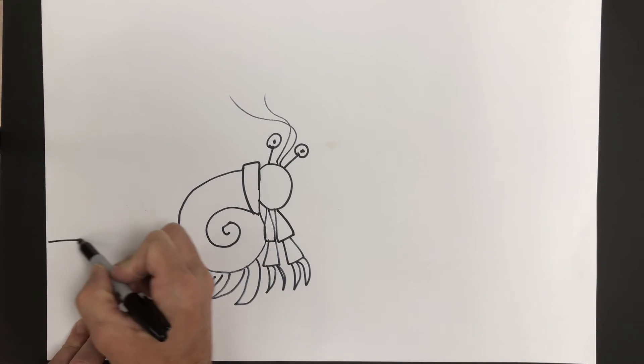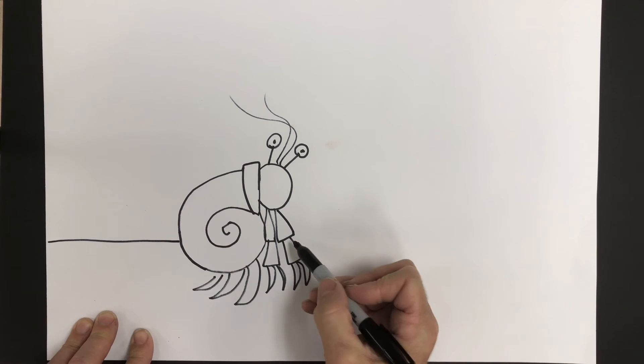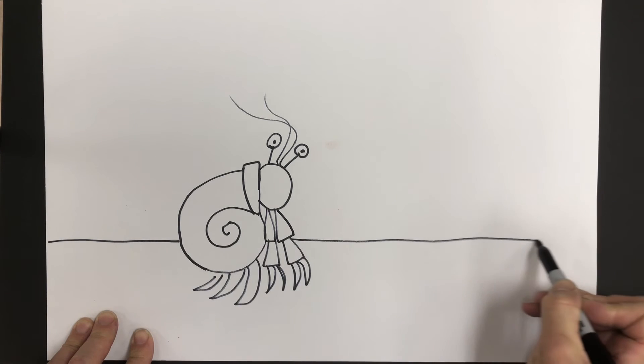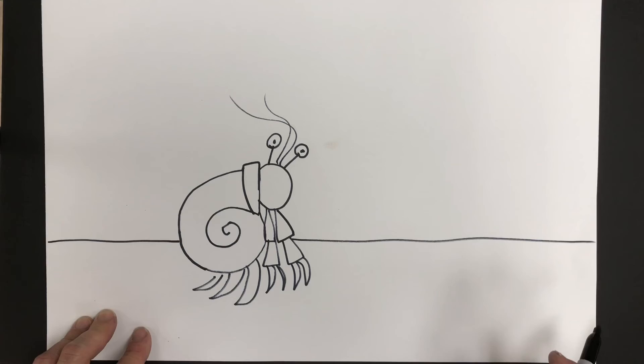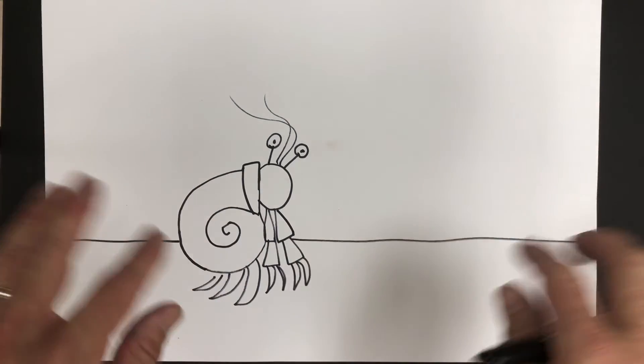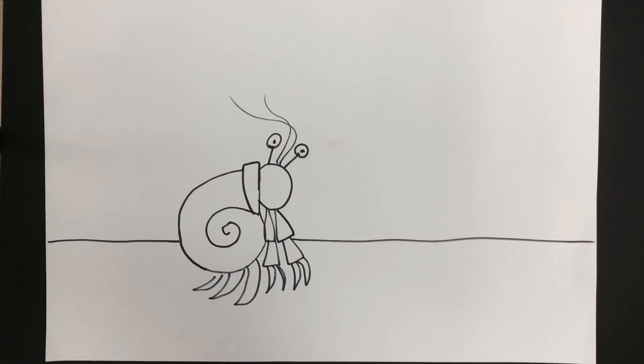So once you're finished with that, you can go ahead and add your horizon line, which is kind of like the ocean floor, that line going across, and then you get to decide whatever you want to add to this picture from the story.